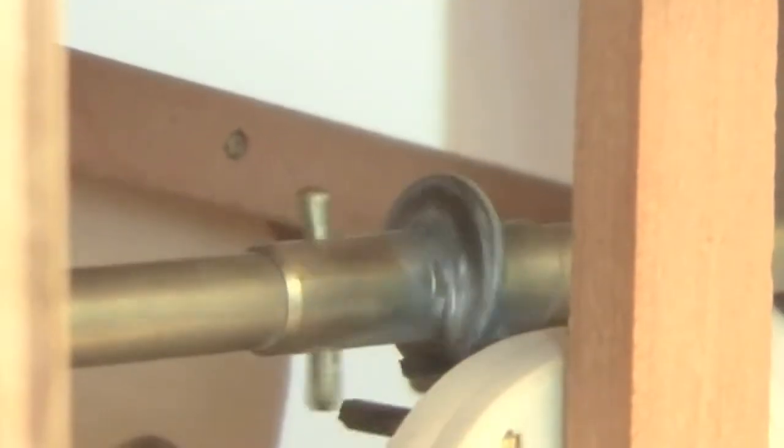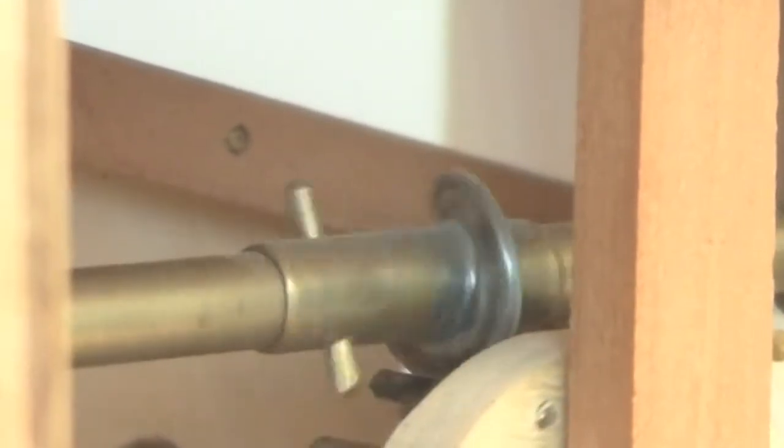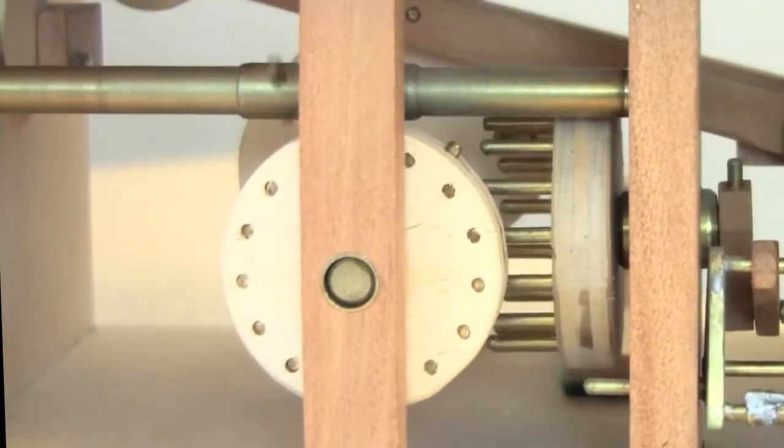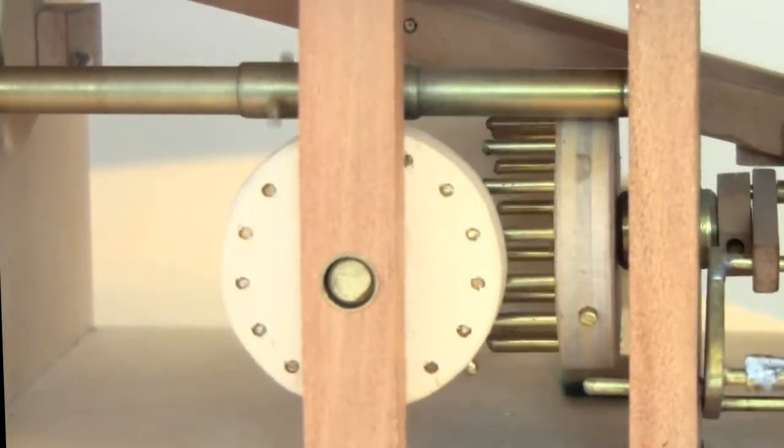Also on the shaft is a split washer worm gear that turns a 15-tooth pinwheel gear. This, in turn, drives a second pinwheel gear of equal size, which operates the traffic signal.